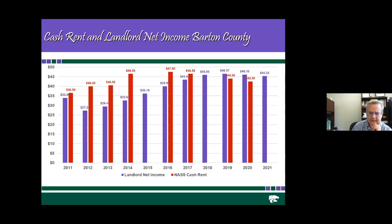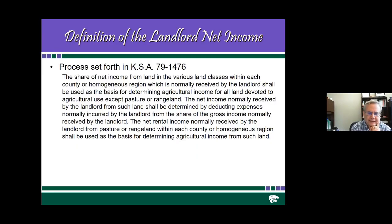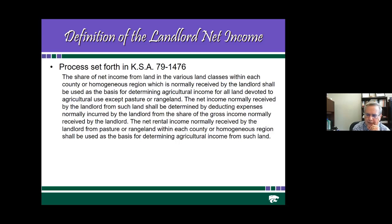Early in the period, cash rents were quite a bit higher than what the landlord net income was. More recently, we've seen a switch where landlord net incomes are a little bit higher than the cash rental values from the National Ag Statistics Service. If you look at the statute, the process is set forth in Kansas Statute 79-1476. Basically, it's done on a share income perspective — the share of net income from various land classes normally received by the landlord.